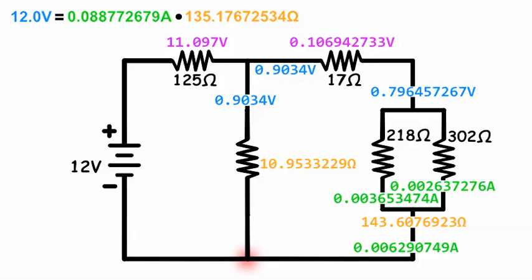The current in this branch should be the total current minus this current. But we'll use Ohm's law.